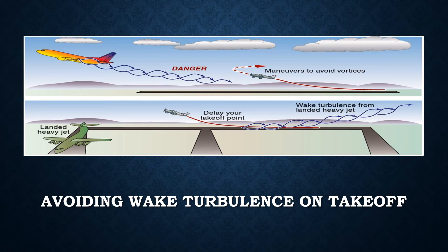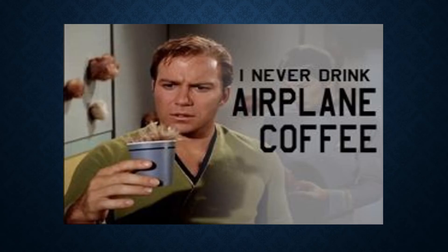Pilots must also consider the wind in avoiding wake turbulence, because wing tip vortices drift with the wind at the same speed as the wind. The good news is there is one final option — wait it out. Wake turbulence doesn't last forever and it begins dissipating as soon as it is produced by an airplane. According to the FAA, if a pilot is unsure of the other aircraft's takeoff or landing point, approximately three minutes provides a margin of safety that allows wake turbulence dissipation.